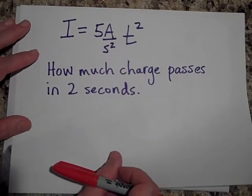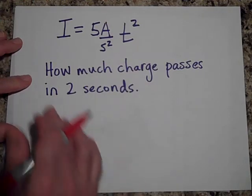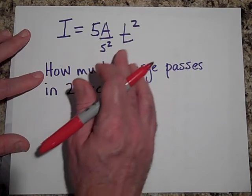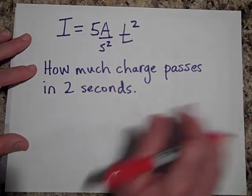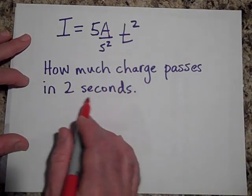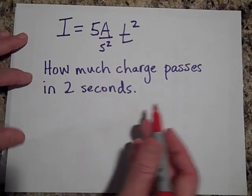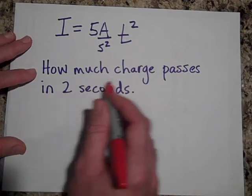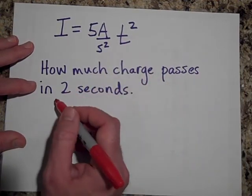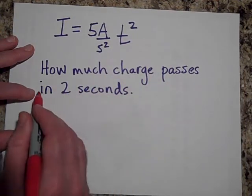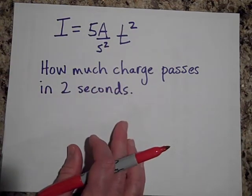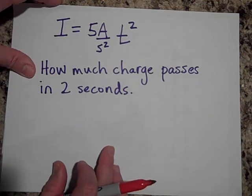Moving right along here. Ah, these are getting tougher. Okay. So here goes. So we have a current, it changes with time. It's five amps per second squared times T squared. And they want to know how much charge will pass by in the first two seconds. So it shouldn't say in two seconds, they should say from zero to two seconds. So how much charge passes from zero to two seconds? So you really have to say which two seconds you're talking about. So let's talk about the first two seconds.